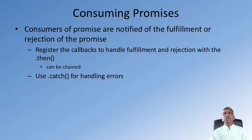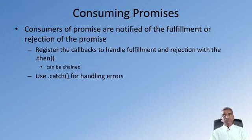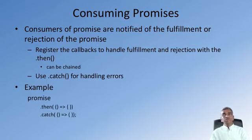To consume a promise, you register an appropriate callback function for when the consumer of a promise is notified either of the fulfillment or the rejection of the promise. Callbacks are registered through dot-then on the promise, and you use dot-catch to catch the errors within the returned promise. The dot-then methods can be chained together, as you will see in the exercise. You would normally handle a promise by chaining dot-then and dot-catch to the promise value.